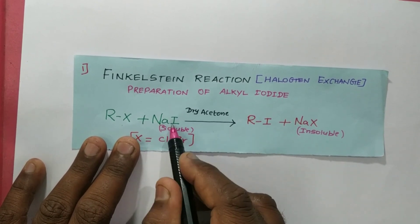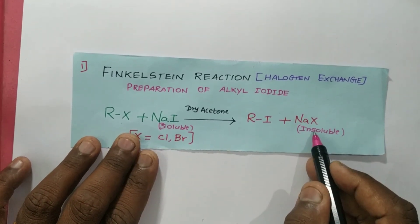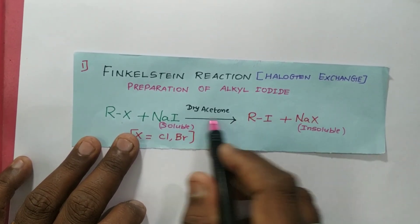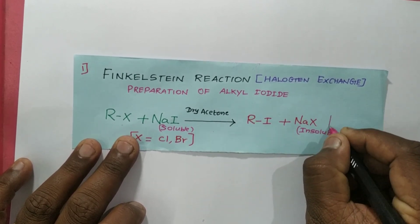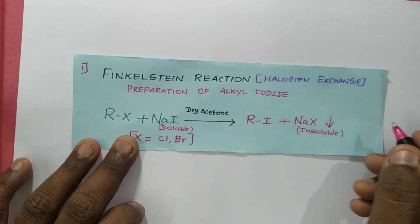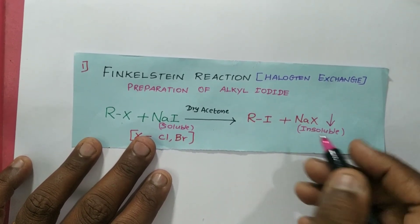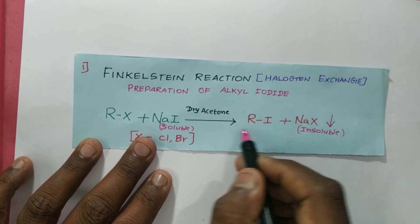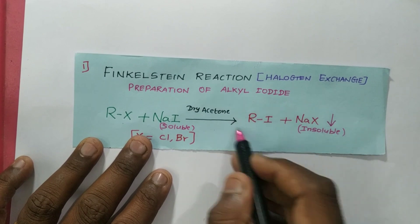This is an important preparation of alkyl iodide because we find it based on solubility. Sodium iodide is soluble in acetone, but sodium halides like sodium chloride or bromide are insoluble in acetone. It will be converted into insoluble precipitate, so the backward reaction will not happen. The product is stabilized.